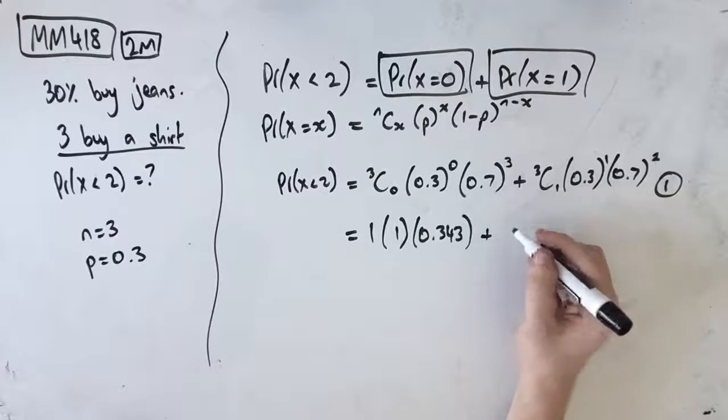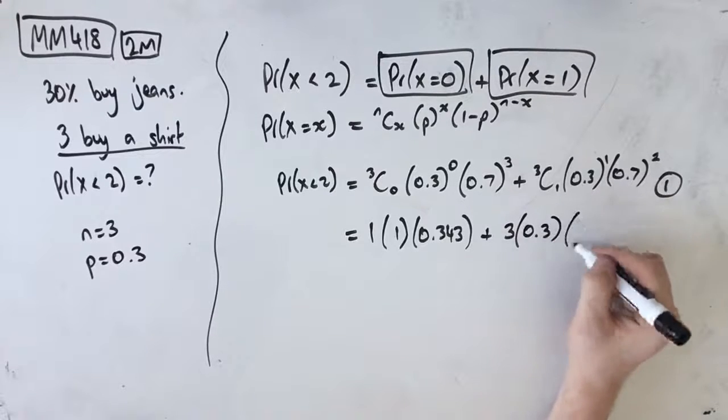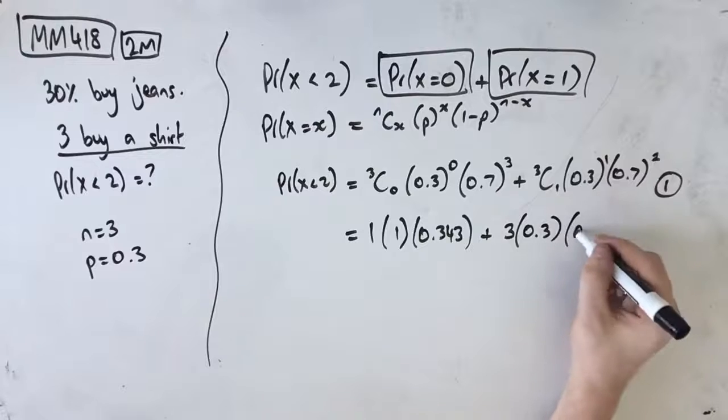Plus 3C1 which is 3. 0.3 to the power of 1 is just 0.3. And then 0.7 times 0.7 is 0.49.